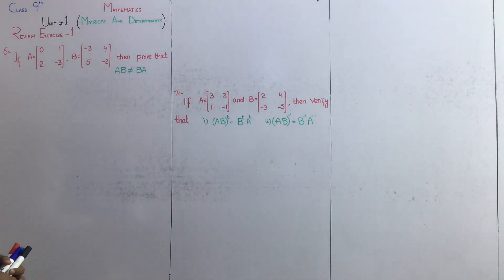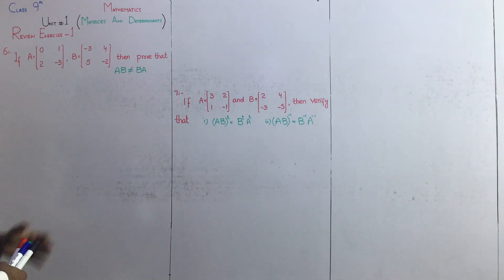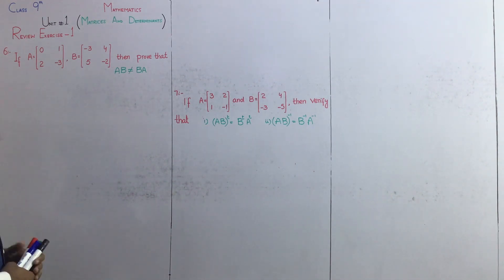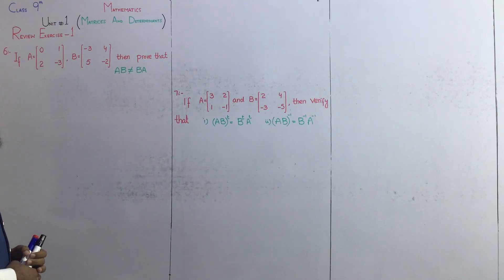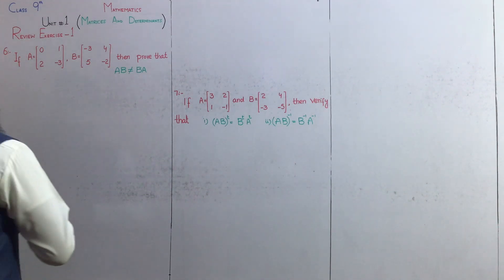Review exercise number 1, question number 6. A matrix bhi given hain, B matrix bhi given hain, then prove that AB is not equal to BA. Solve.